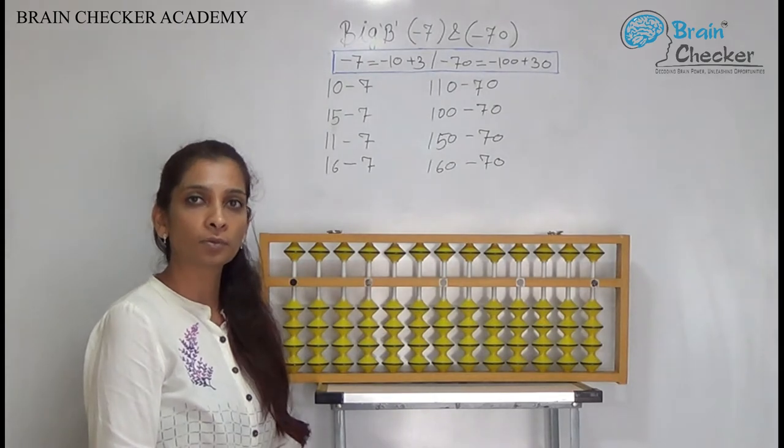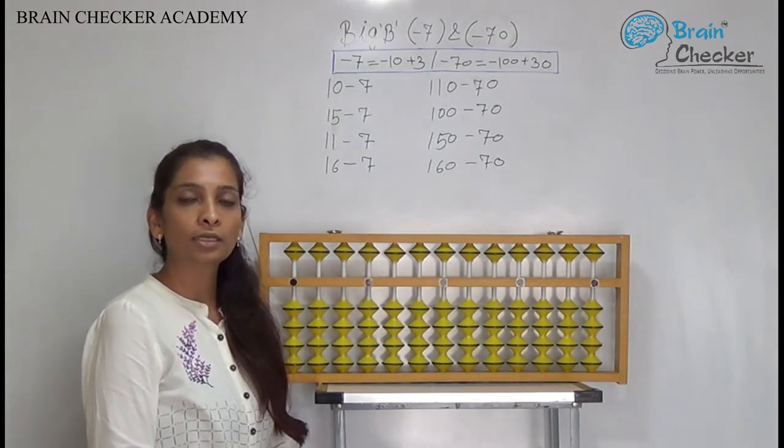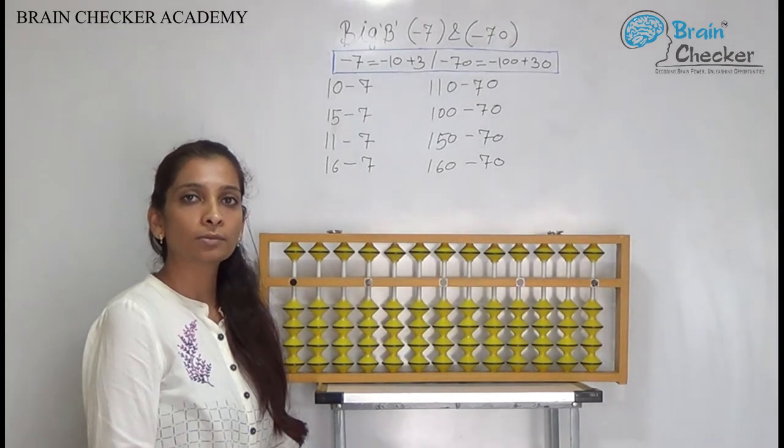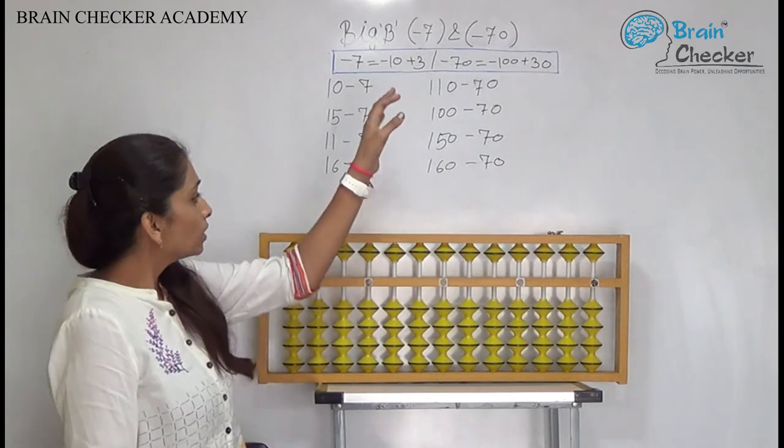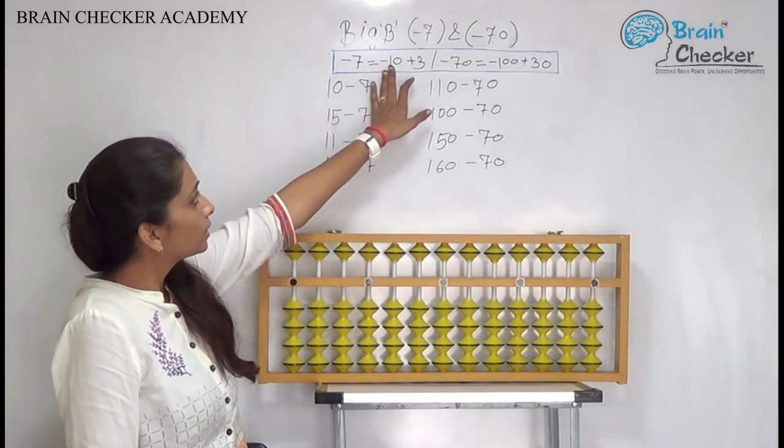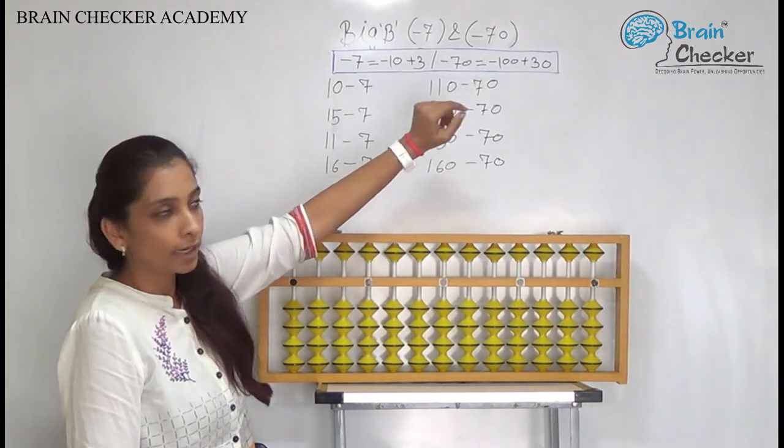Till now we have learned the formula for minus 8 and 80 and minus 9 and 90. In this session we are going to learn about the formula for minus 7 and 70. So the formula for minus 7 is minus 10 add 3, and for 70 it is minus 100 add 30.